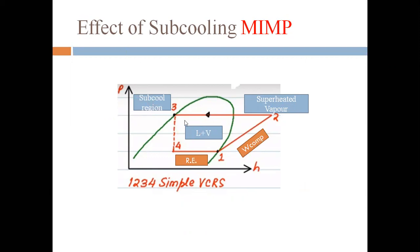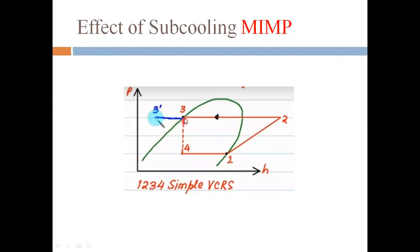Now, what is the effect of sub-cooling on the performance of the VCRS — is COP increasing, decreasing, or remaining constant? To carry out sub-cooling, we need to shift point three to the left side, to three-dash. Sub-cooling means we are cooling the refrigerant with the help of an extra amount of water or by using a low-temperature working medium. So this point three gets sub-cooled and is shifted to the left side as three-dash.